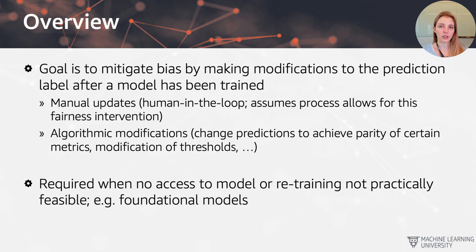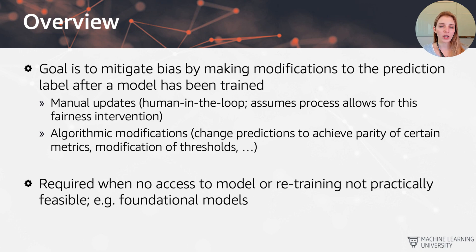This is actually quite a common scenario where you might not be the main owner of the model, but you can measure the fairness of the outcomes. You can then take a fairness intervention and modify the outcomes according to one of the fairness criteria that we already had a look at. There are going to be multiple options for how you can actually go about modifying the results.